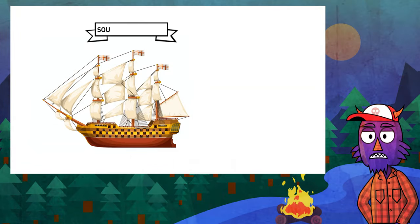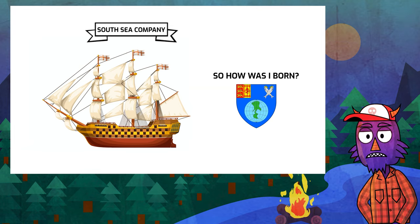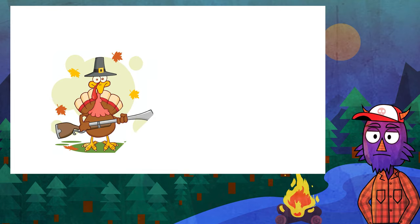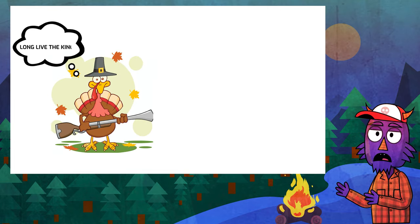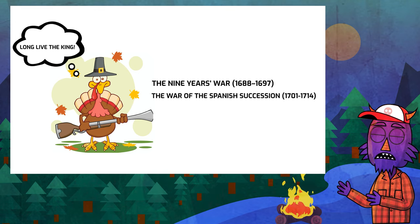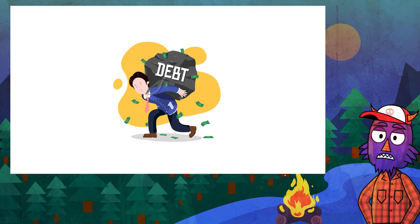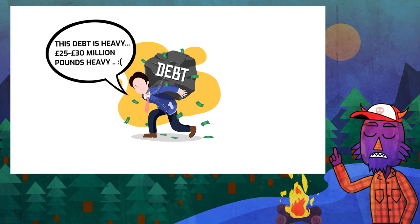Before we get into the details of the bubble, let's first understand the origins and foundations of the South Sea Company. In the late 17th century and early 18th century, England was engaged in a series of wars: the Nine Year War lasting from 1688 to 1697, followed by the War of Spanish Succession from 1701 to 1714. These wars drained England's coffers and piled up a national debt of anywhere between 25 to 30 million pounds.